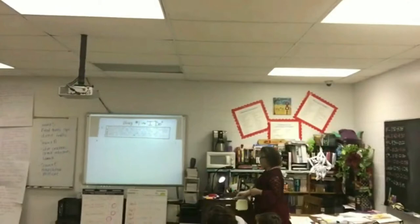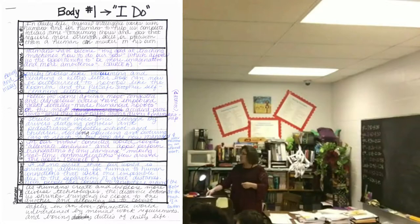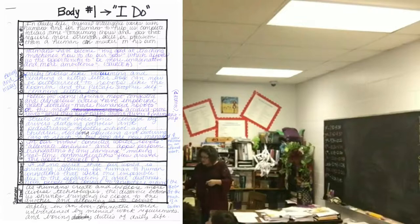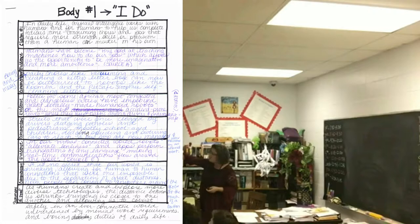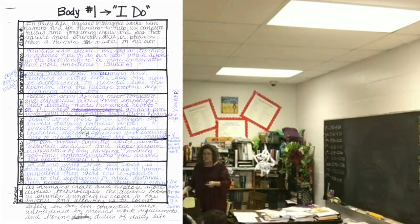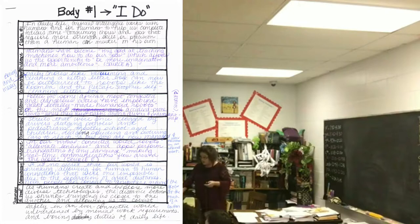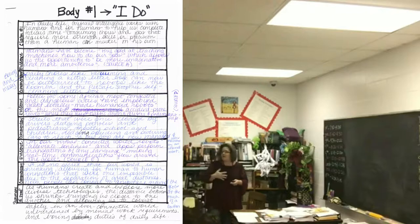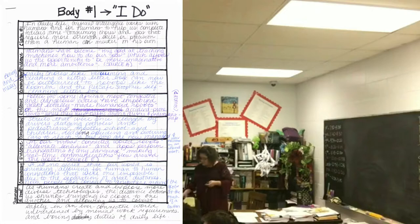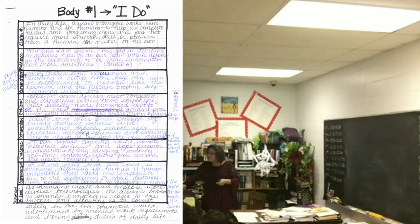Let's look at how I worded this so we can see how we're going to word the one we do together. The first one I picked: 'Humans have become very good at teaching machines how to do our jobs, which affords us the opportunity to be more imaginative and more ambitious' — Source A — solving problems, creating industries, and liberating us. In my commentary: 'For example, boring and messy daily chores like vacuuming and cleaning a kitty's litter box can now be outsourced to robots like the Roomba and the PetSafe scoop-free self-cleaning litter box.' Your commentary needs to provide direct examples and explanations.